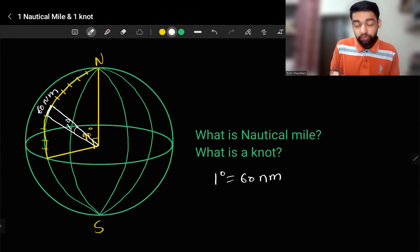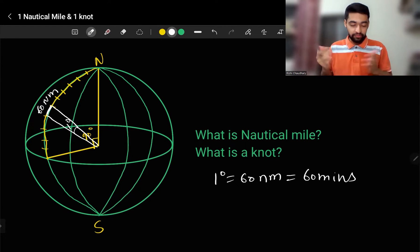That is also equivalent to 60 minutes. As degree can be equal to distance, here I have projected one degree on the Earth surface. That Earth surface arc length is nothing but 60 nautical miles and that is also equivalent to 60 minutes.